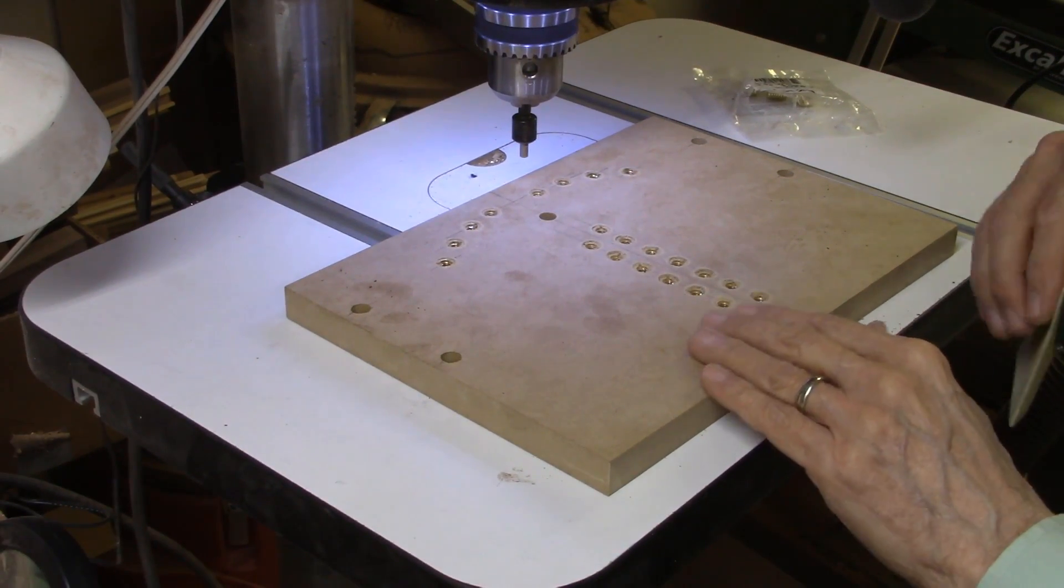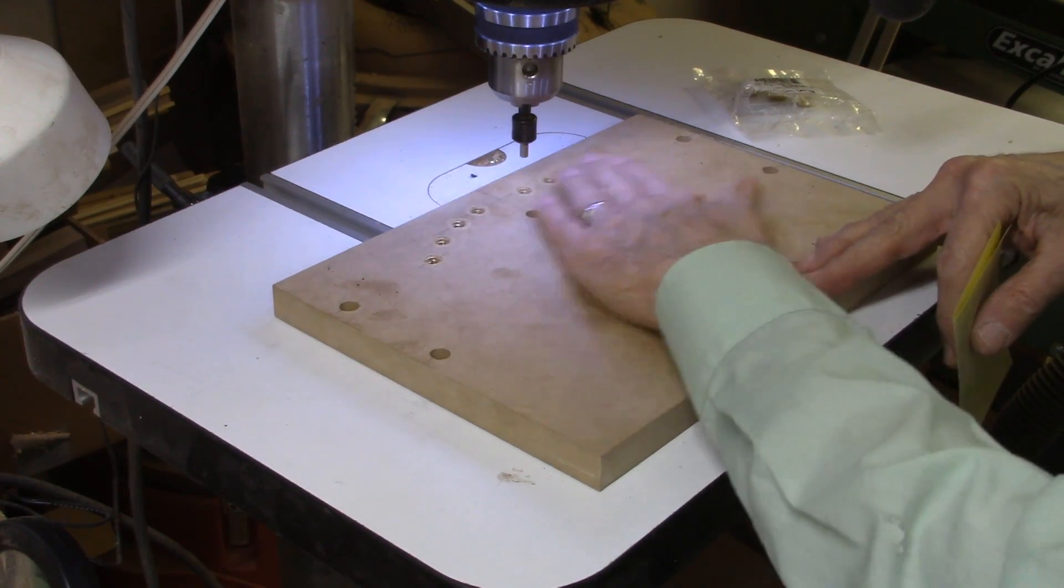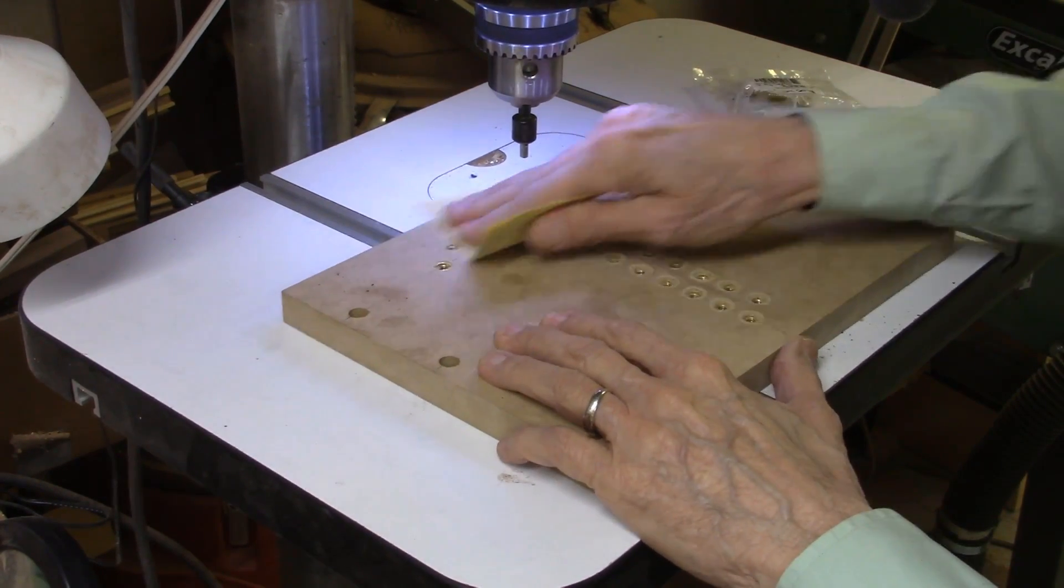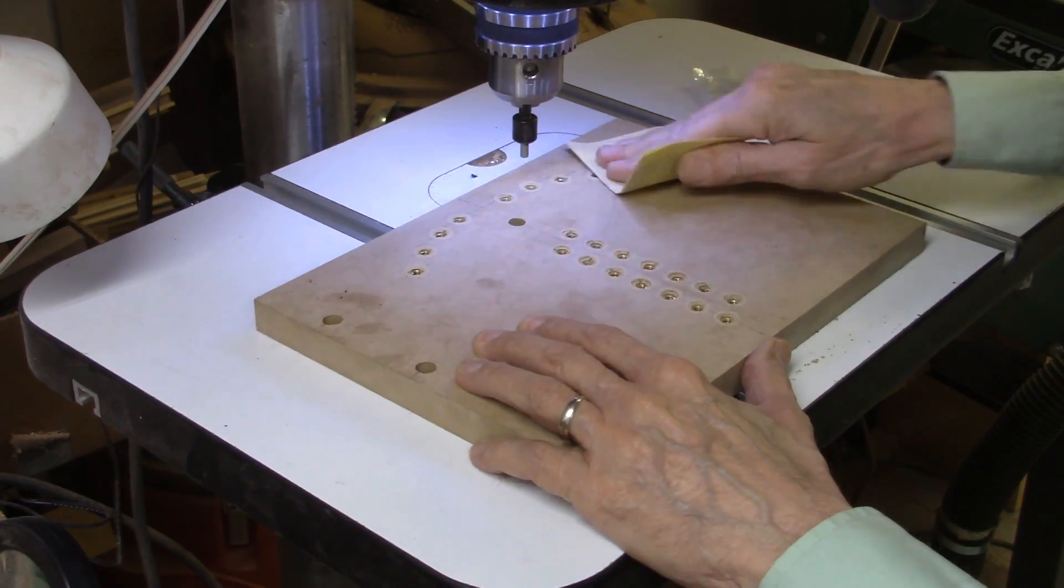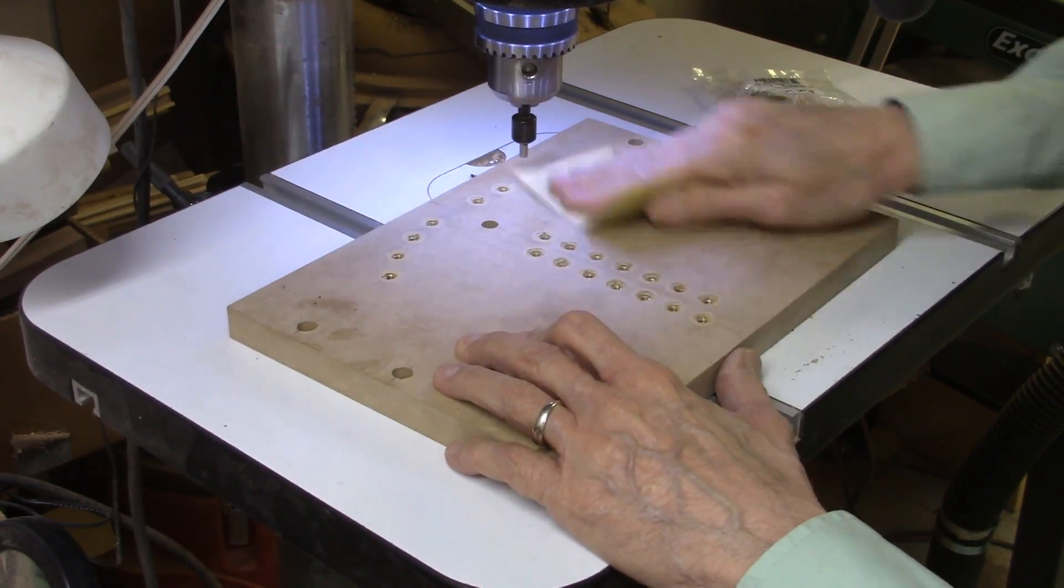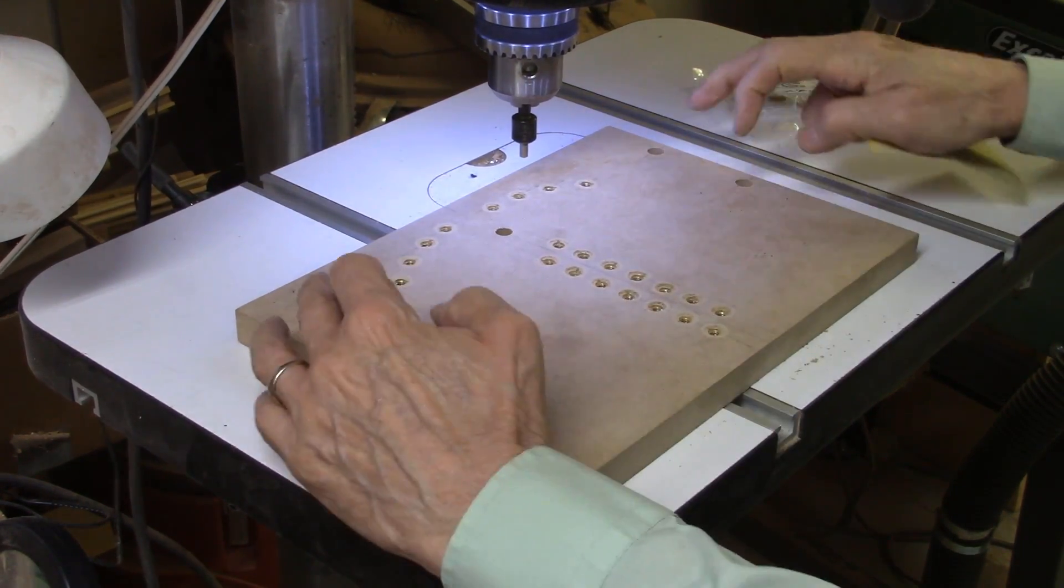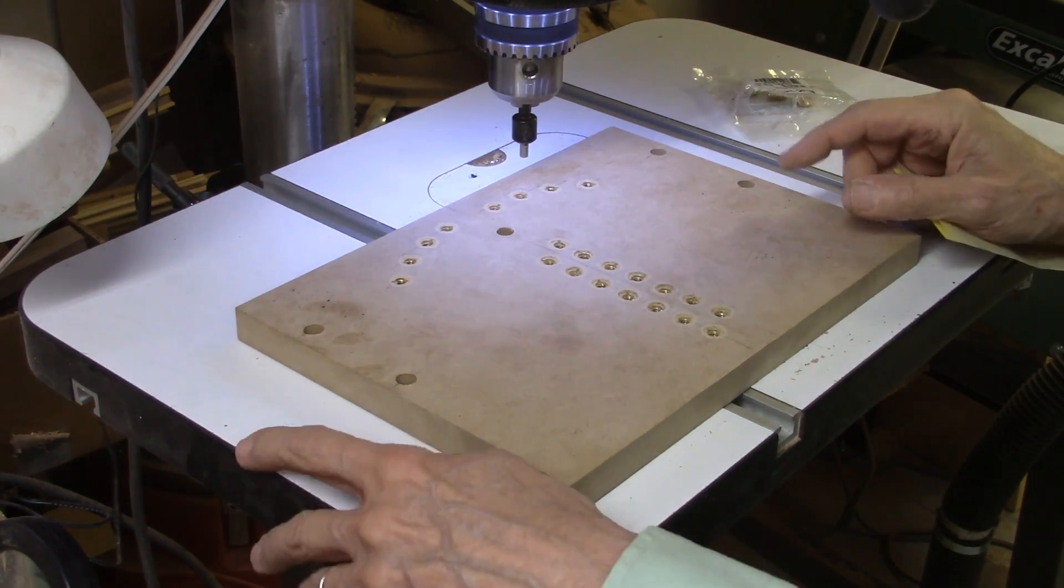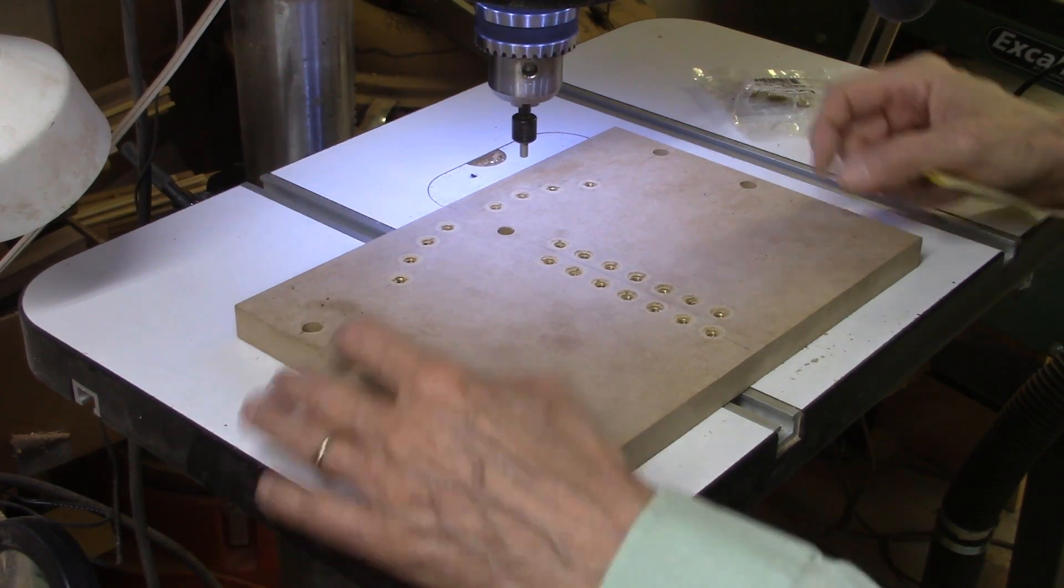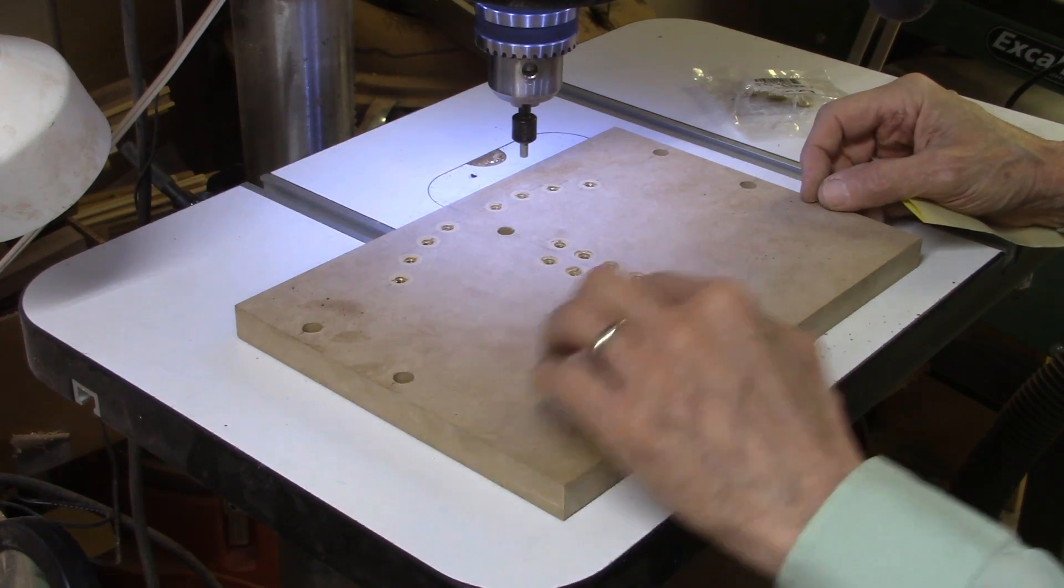The inserts are all in for the quarter-twenty inserts. A light sanding will get the little bit of mushroom that turns into the surface off. Now these remaining five holes are number ten, thirty-two inserts. Same size hole, just different size thread.